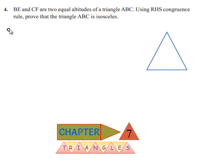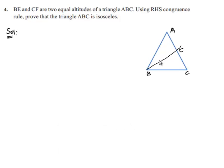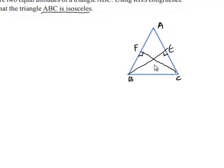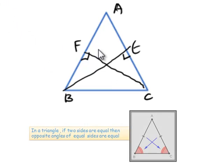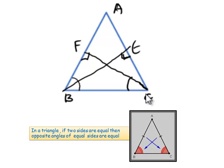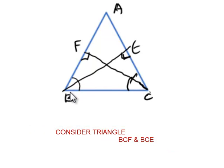Moving on to the solution, let us consider a triangle ABC in which BE and CF are equal altitudes. We need to prove that ABC is isosceles, which means we need to prove that two sides of the triangle are equal. In order to do that, let us prove that angle B is equal to angle C by initially proving the congruency of triangles BEC and BFC.